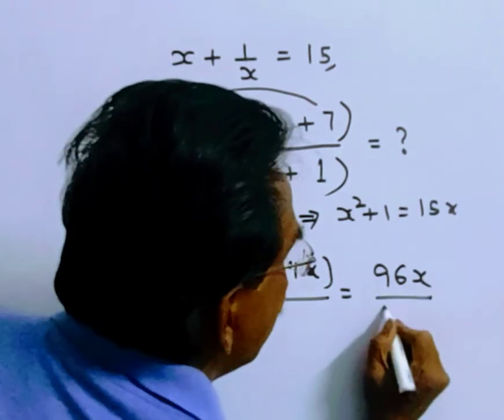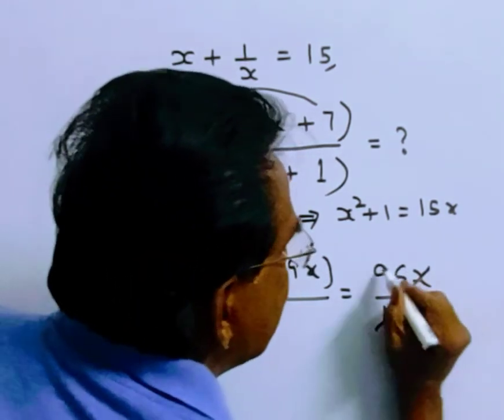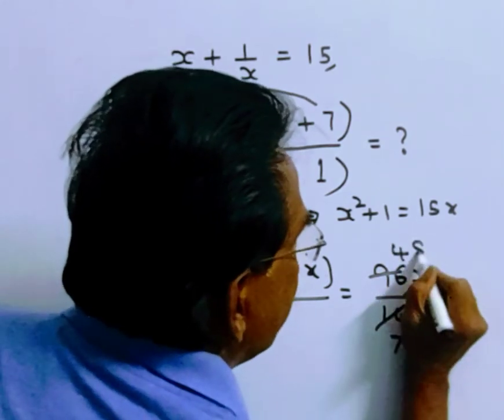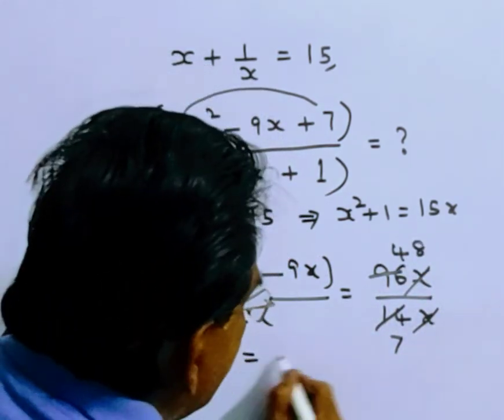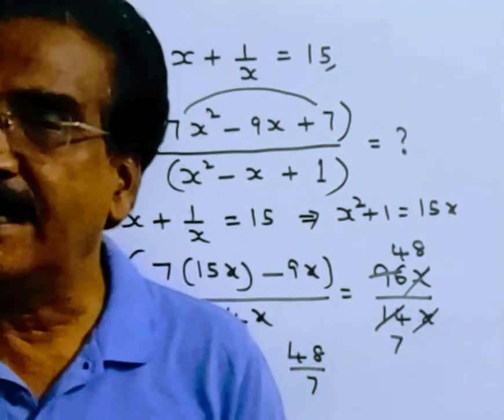96x by 14x. x gets canceled, 7 goes into 48. So 48 by 7. 48 by 7 is the value of this expression.